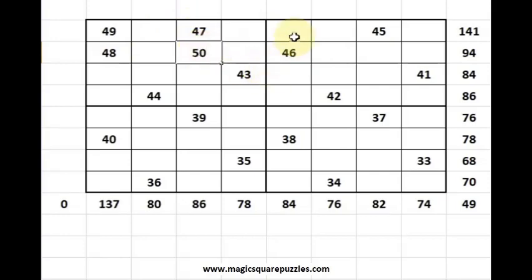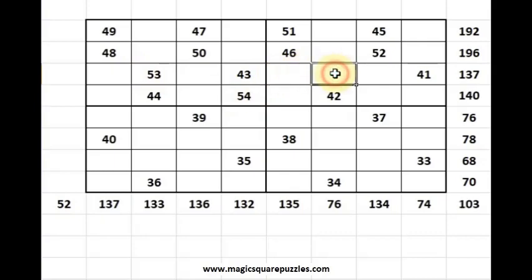50, 51, 52. After 52, come to 49, make a horse move like this, continue: 53, 54, 55, 56.